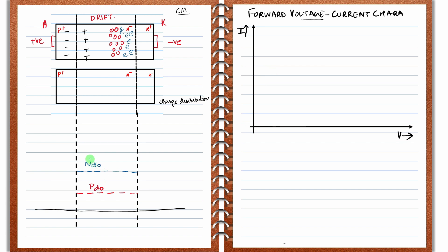You can see here I have already drawn two lines. This upper line represents the n-type charge carriers in the drift region in the equilibrium condition. Similarly, this red line shows the p-type charge carriers in the drift region in equilibrium. Because the drift region is an n-type material, the concentration of n-type charge carriers is higher than the p-type charge carriers.